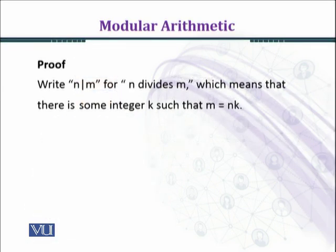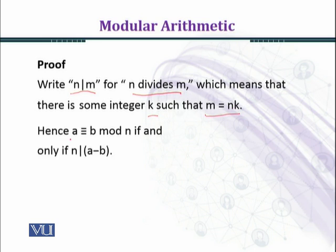Write n vertical bar m for n divides m, which means that there is some integer k such that m equal to n k. This is the definition of divisibility. a is congruent to b modulo n if and only if n divides a minus b.